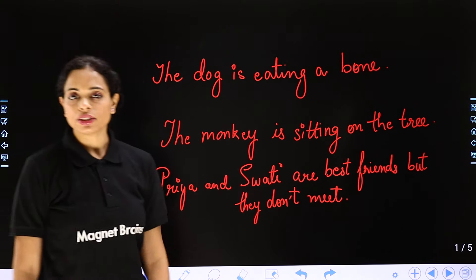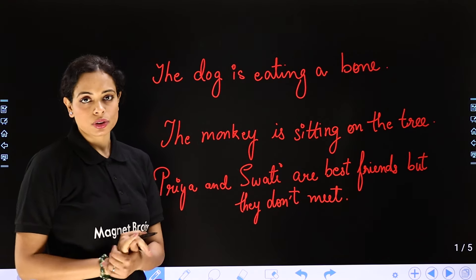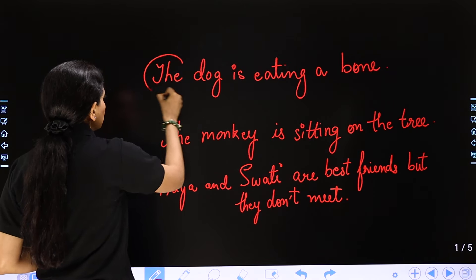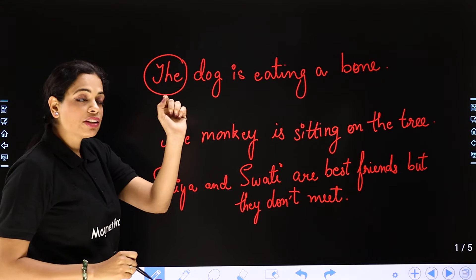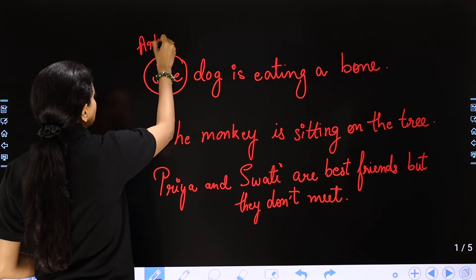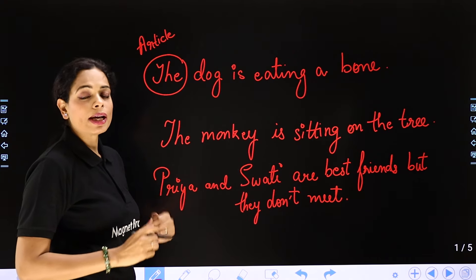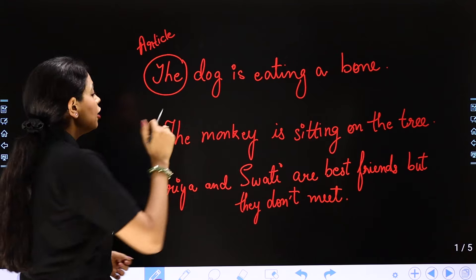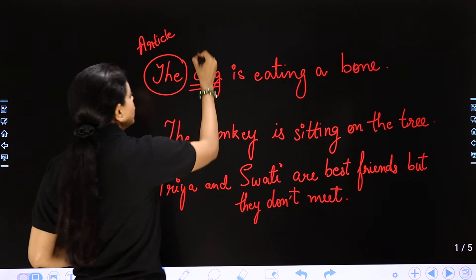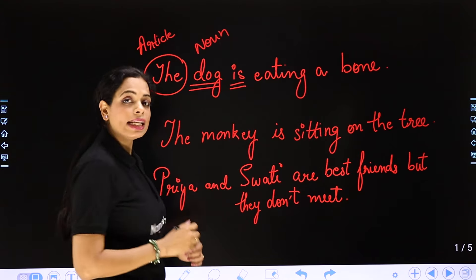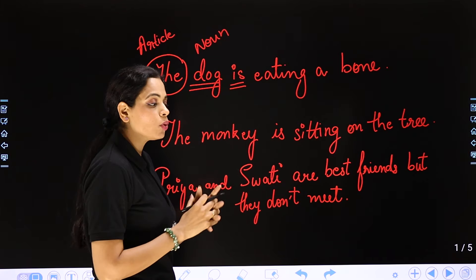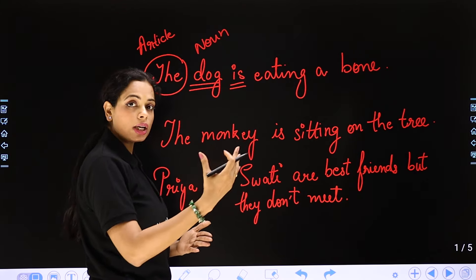I have got three sentences in front of you. The first sentence is: 'The dog is eating a bowl.' Here, first of all, we have the word 'the', which tells us that I am talking about a specific, particular dog. This word 'the' we call an article, which tells us whether we are talking about something general or specific. Then 'dog' — here we are talking about an animal. We are talking about a noun.